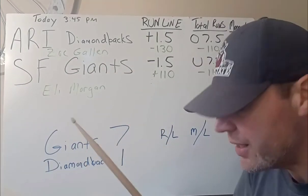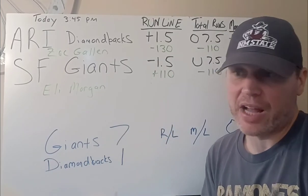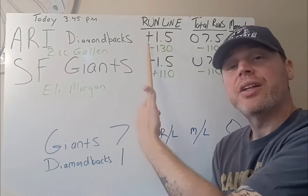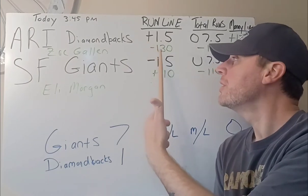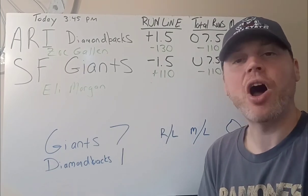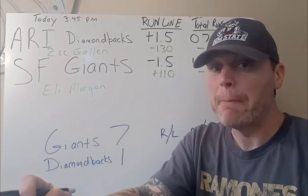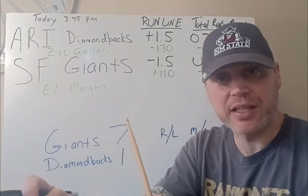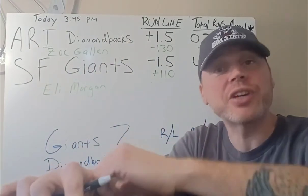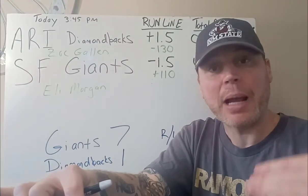The number underneath the run line is the house odds, based on an increment of 100 — that's just the standard. What it means is, if you take the plus one and a half with the Diamondbacks, the minus means you have to lay or put out $130 for every $100 that you want to win. That doesn't mean you have to bet a hundred — you can bet anything you want. But the lines are always based on a hundred as a round number. Essentially, $130 will be taken from your account, or if you're at a betting window you'll put up $130. If the game comes out in your favor, you get the $130 back plus $100.